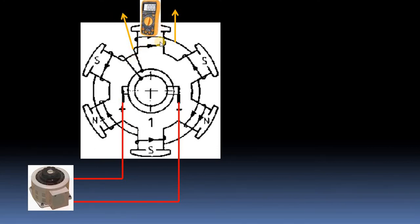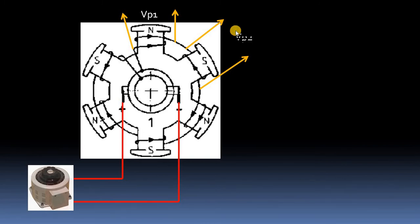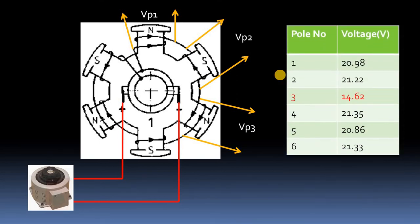I apply the voltage with the variac and measure the voltage across each pole using a multimeter. Voltage across pole one is VP1, pole two is VP2, pole three is VP3, and so on for all six poles. The readings I got are: pole 1 = 20.98 V, pole 2 = 21.22 V, pole 3 = 14.62 V, pole 4 = 21.35 V, pole 5 = 20.86 V, pole 6 = 21.33 V. The average of the six voltages is 20 volts.